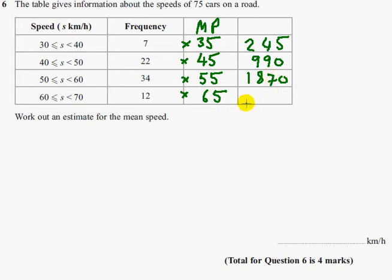12 times 65 is 780. So if we add all of these up, that will give us the total speed everyone was going at, and that's 3,885 kilometres per hour.